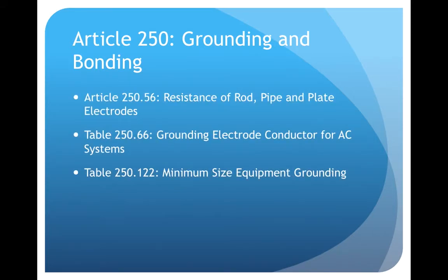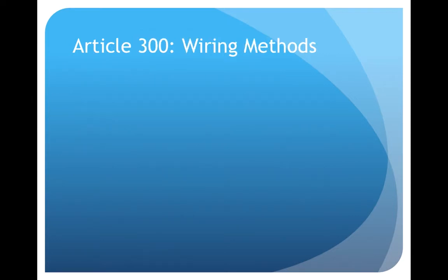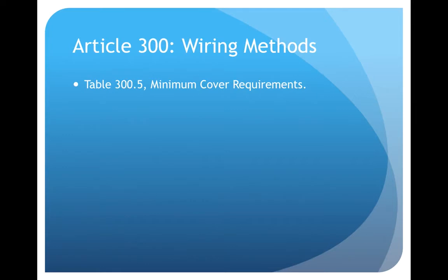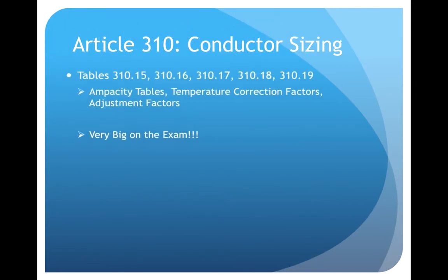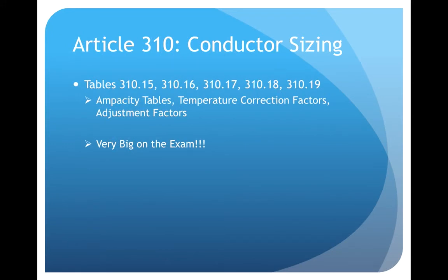Article 250: Grounding and Bonding. Section 250.56, Table 250.66, and Table 250.122 — if you didn't have these on your notes, make sure you have them now. Article 300: Wiring Methods. The one thing that's important to remember there is Table 300.5 Minimum Cover Requirements. You may or may not see problems on it, but at least have that tabbed so you can quickly access it.